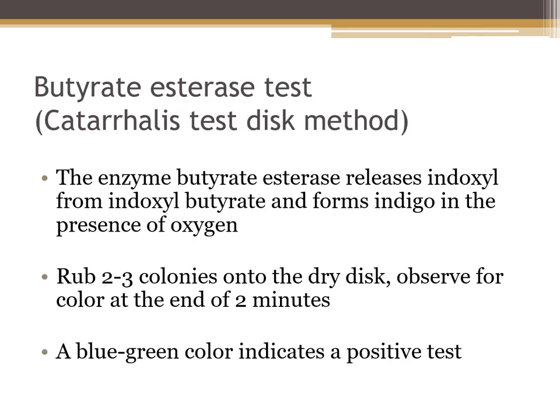The catarrhalis disc test is a quick test where we look for the enzyme butyrate esterase. If the organism has butyrate esterase, it releases indoxyl from indoxylbutyrate, forming indigo in the presence of oxygen. We rub two to three colonies on a dry catarrhalis disc and observe for a color change at two minutes — usually a blue-green color indicates a positive test and confirms Moraxella catarrhalis. On the Bactacard, Moraxella catarrhalis would be IB positive. In summary, the key Neisseria species covered in this unit are Neisseria gonorrhoeae, Neisseria meningitidis, Neisseria lactamica, and Moraxella catarrhalis.